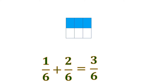But then, if we are going to remove some of the slices, it can look like this, which is actually equal to 1 half. So the sum of 1 sixth and 2 sixths is 1 half.